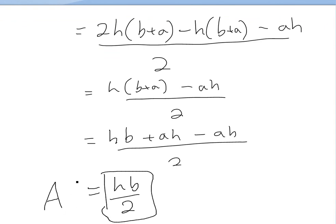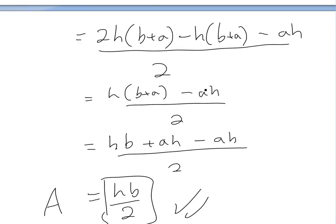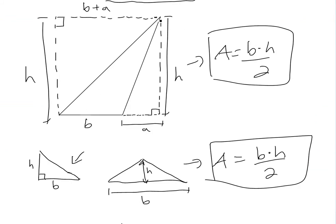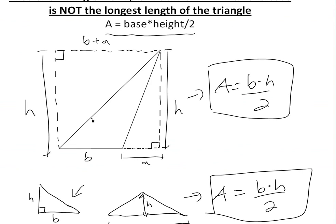And this is the area. As you can see, it works for all of them. It doesn't matter what the triangle is, as long as you have the base and the height — even if it's not a right-angle triangle and the base is not the longest length, it still works. Remember, you could always flip this around: if you consider this as h-prime and this as b-prime, the area is the same. So it doesn't matter how you orient it, you get the same area. Both are equal.